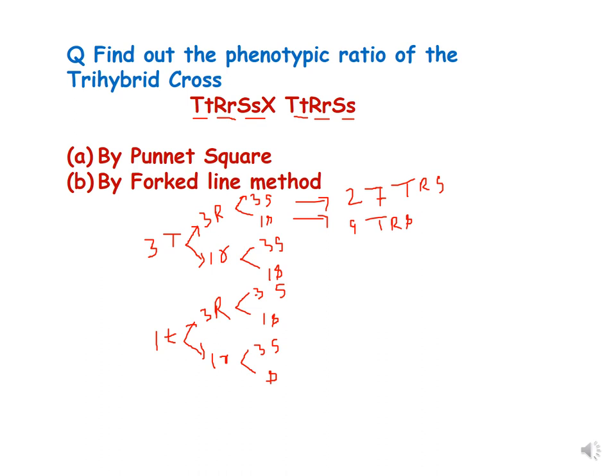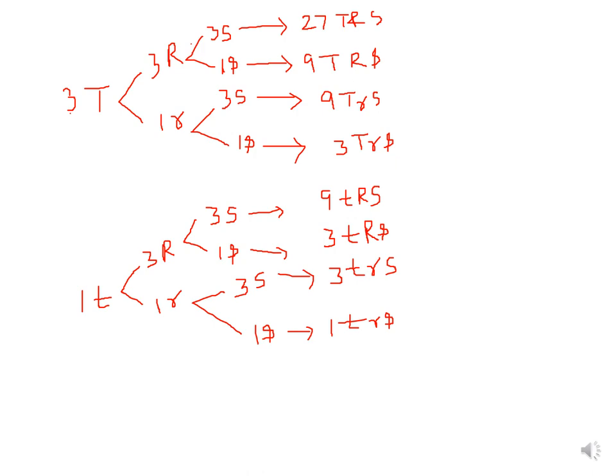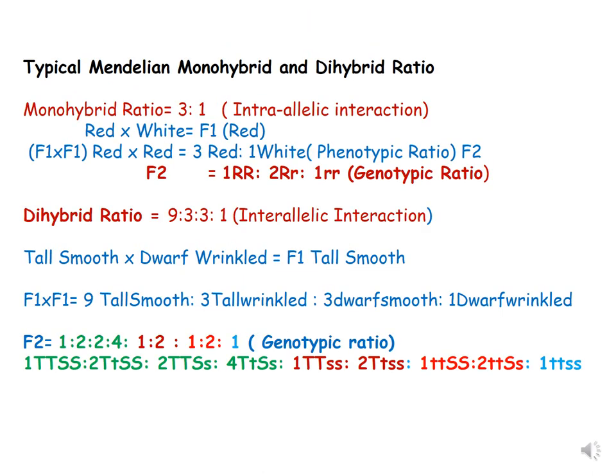We can discuss more in the next lecture. To summarize what we have learned: a typical Mendelian monohybrid ratio following Mendel's laws is 3 to 1, and a typical dihybrid ratio is 9 to 3 to 3 to 1. Thank you for listening patiently and we will discuss more in detail in the other lectures.